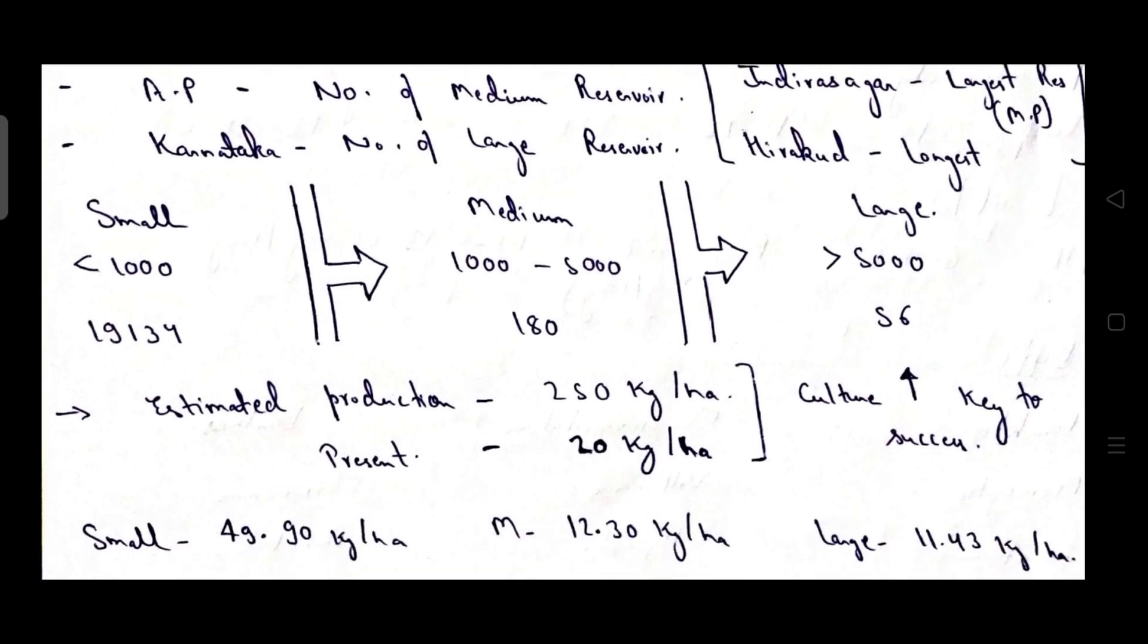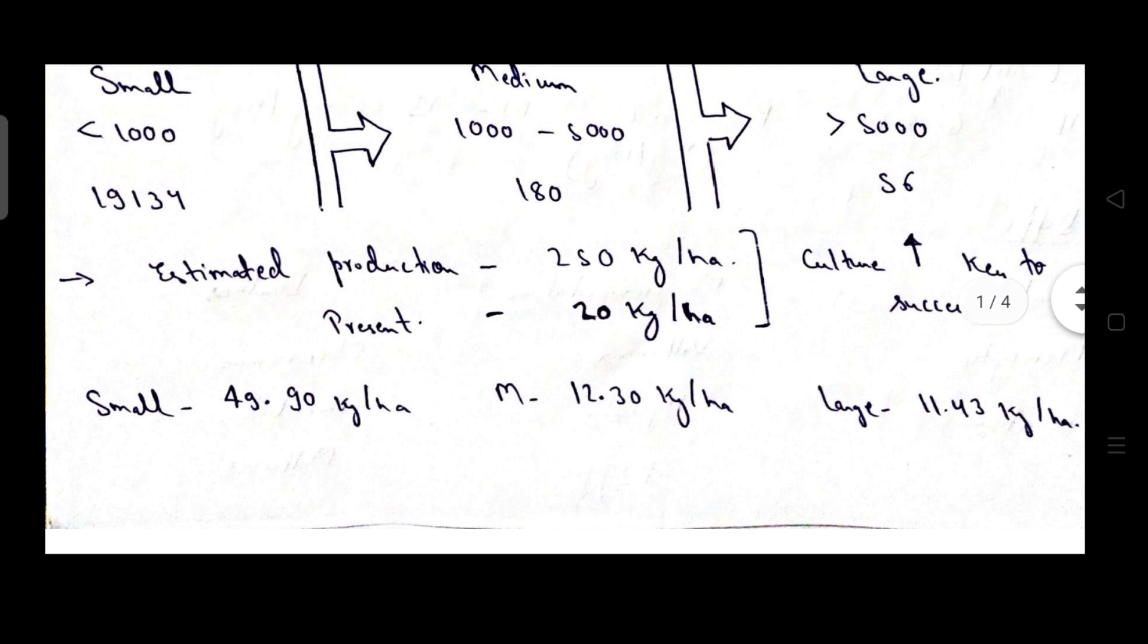Then coming to the number of small, medium and large reservoirs. Small reservoir with an area of less than 1000 hectare, number 19,134. Medium reservoir with an area of 1000 to 5000 hectare, number 180. Large reservoir with an area of greater than 5000 hectare, number 56. Estimated production is 250 kg per hectare from the reservoir fishery. But at present it is 20 kg per hectare. That's why it is termed as sleeping giant or sunrise sector of fisheries.